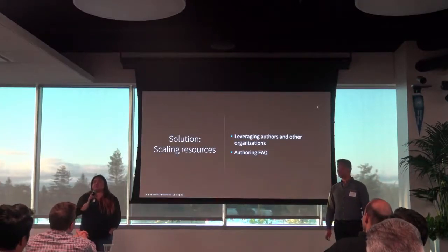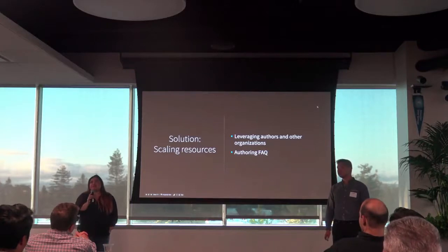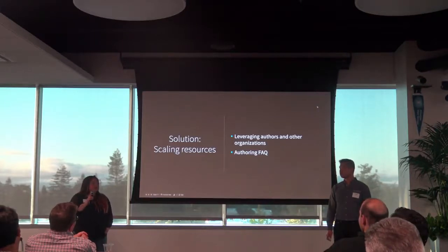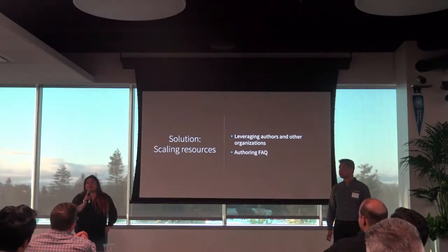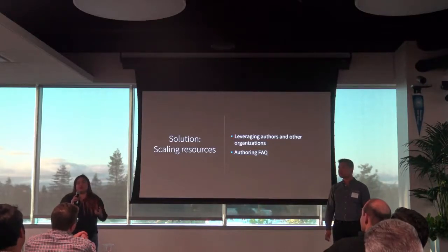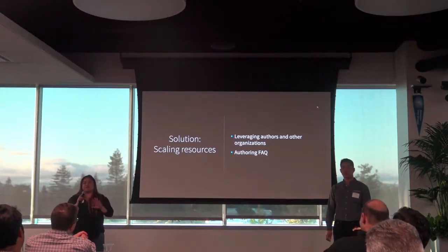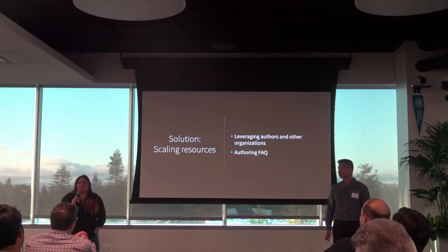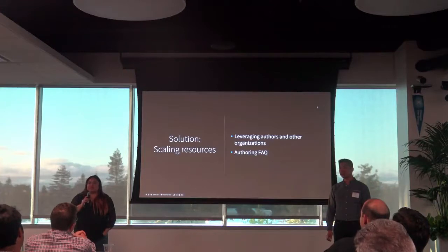Our solution was to start scaling our resources in a smarter manner — leveraging authors and other organizations. We created a Slack channel where authors can help and answer each other's questions. We also created what we call our Inkwell Support Champions program. We took our power authors — the people engaging often with us and with other people — and made them authoring leaders, creating a championship program where they'd be the experts facing the company. We also created an FAQ that handled about 70% of our questions.